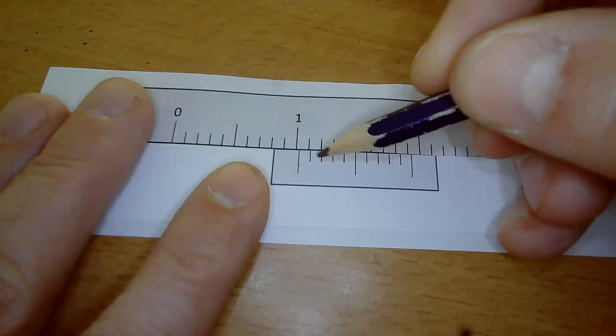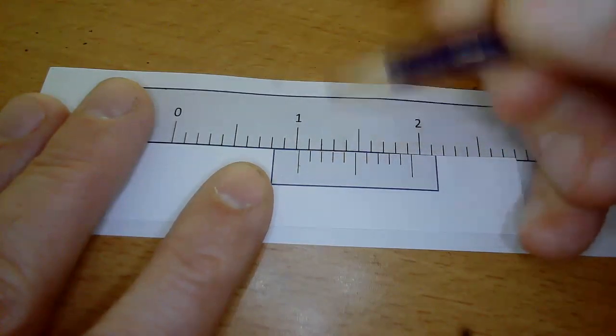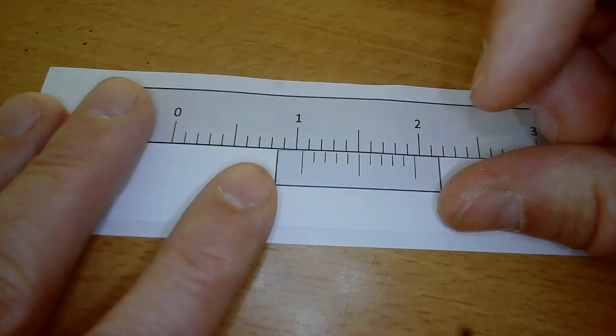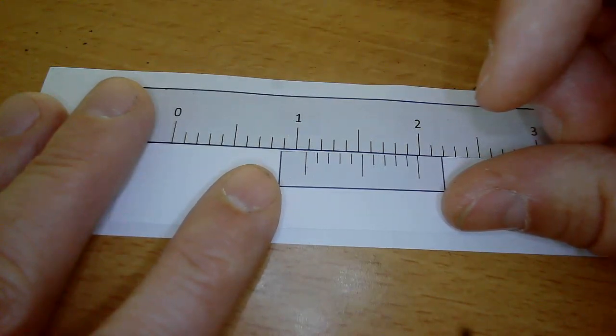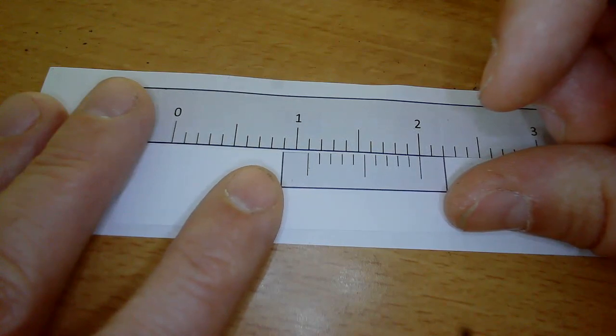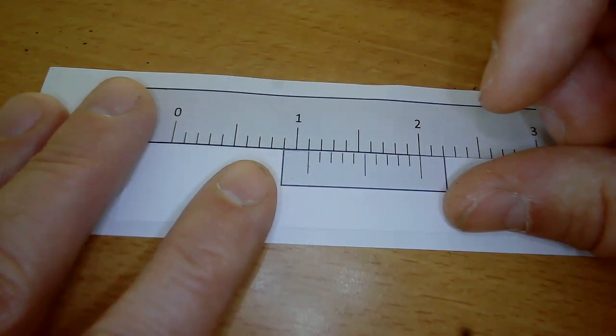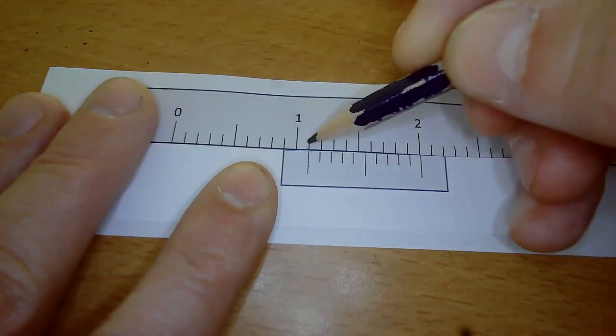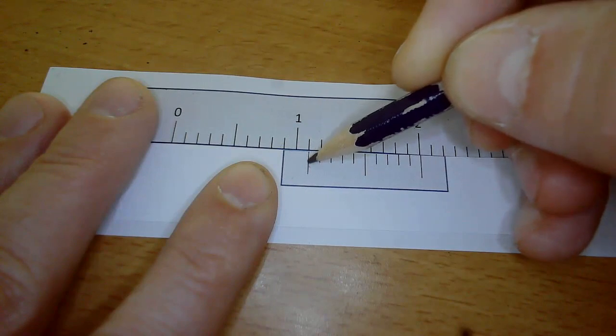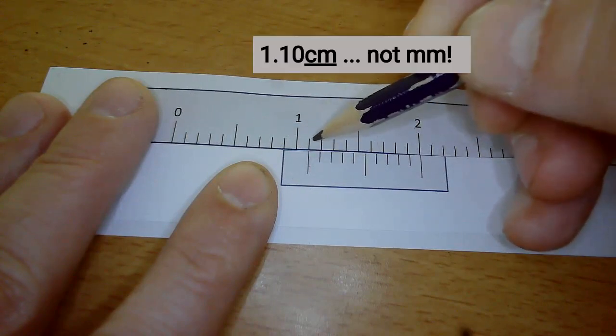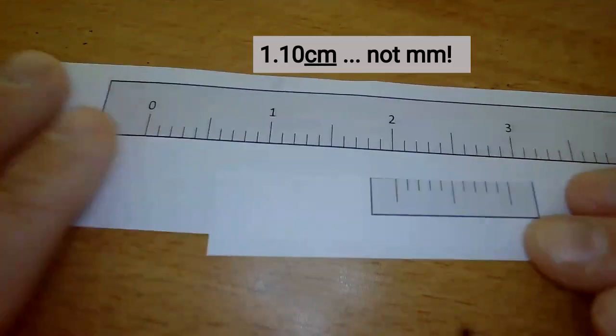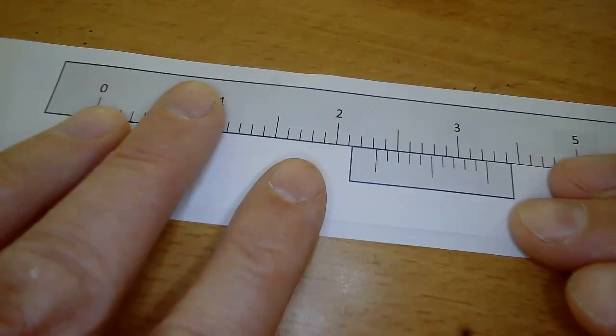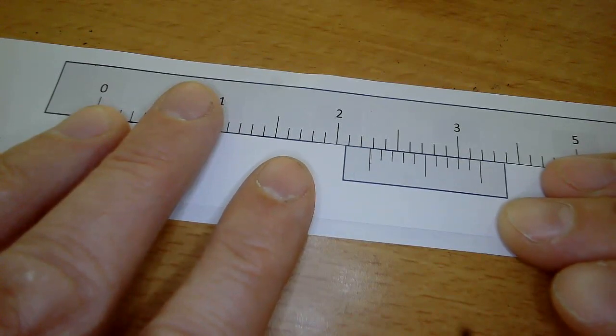the next mark on the vernier scale lines up with the main scale until we reach this point where we have one centimeter and one millimeter, with the zero lining up again. This gives 1.10 centimeters.